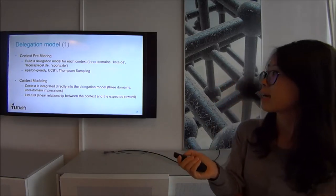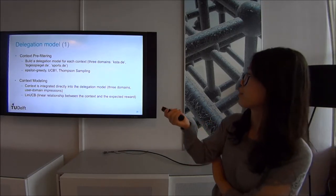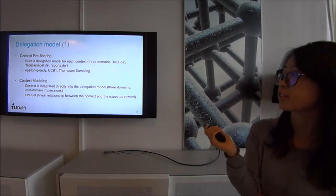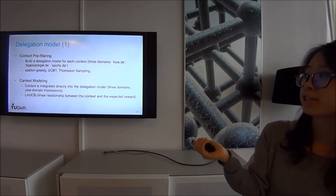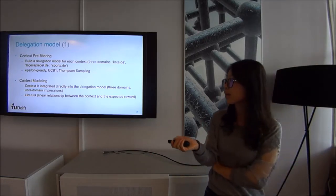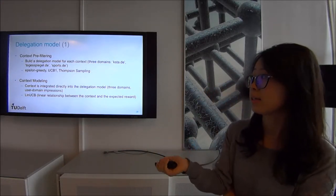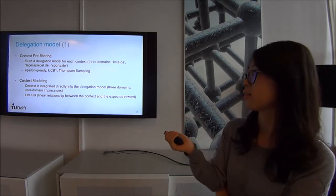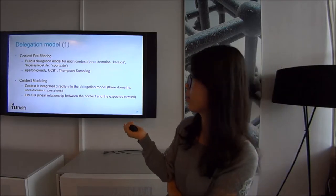In the context pre-filtering method, a delegation model is built for each context. For the domain context, there are three different categorical values, and we apply the three algorithms — epsilon-greedy, UCB1, and Thompson sampling. In the context modeling method, context is integrated directly into the delegation model using both domain information and user domain impressions, and the algorithm used here is Linear UCB.